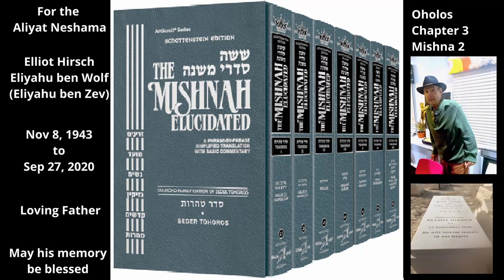Chapter 3, Mishnah 2. We learned in the previous chapter that not only does a corpse transmit Tuma by means of ohel, but even a ladle full of corpse dust and a revius of blood from a corpse transmits Tuma as well. See Mishnahs 1 and 2 in Chapter 1.